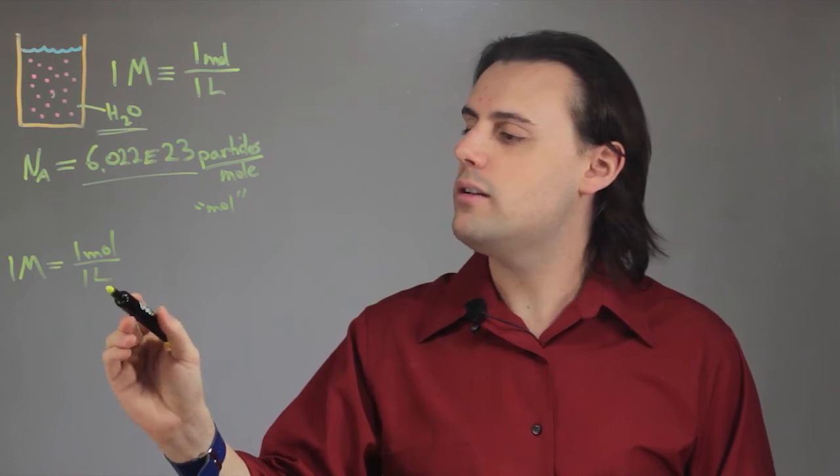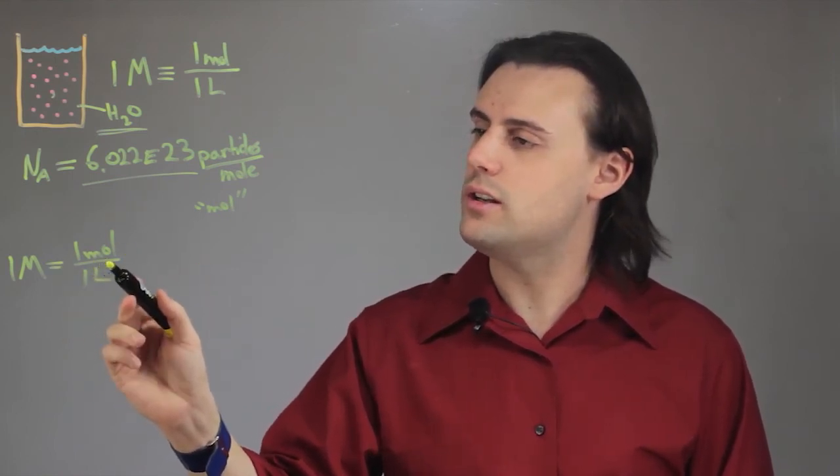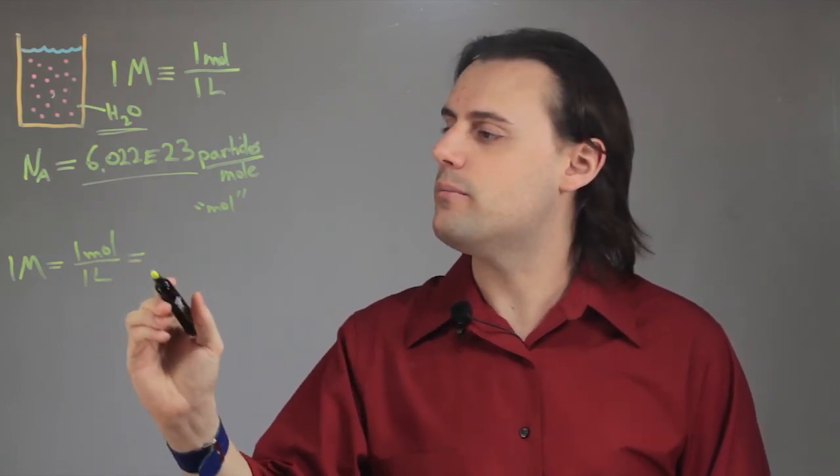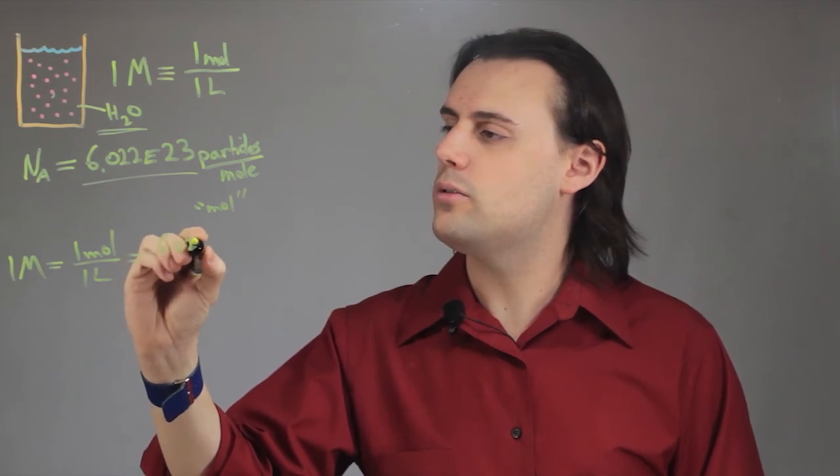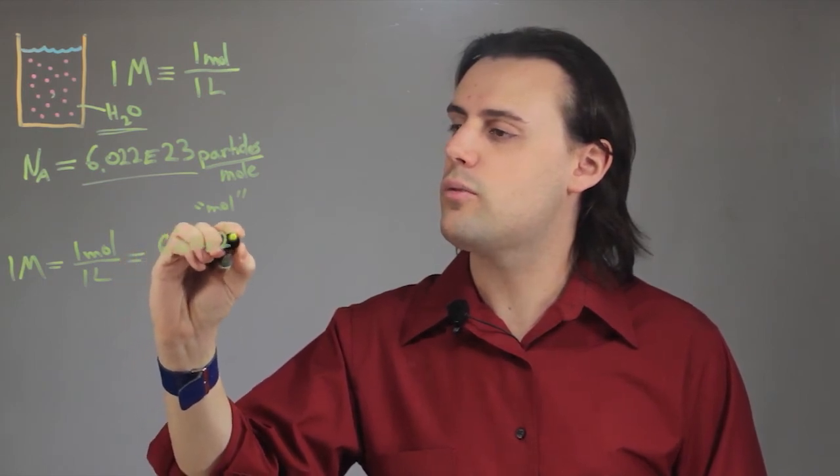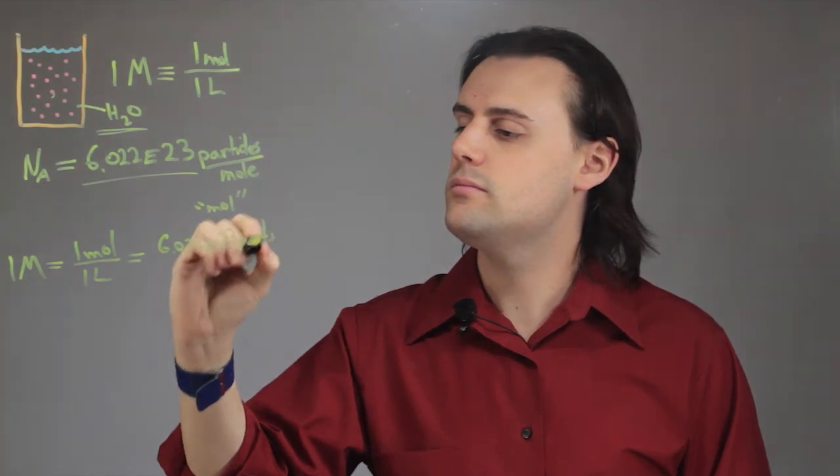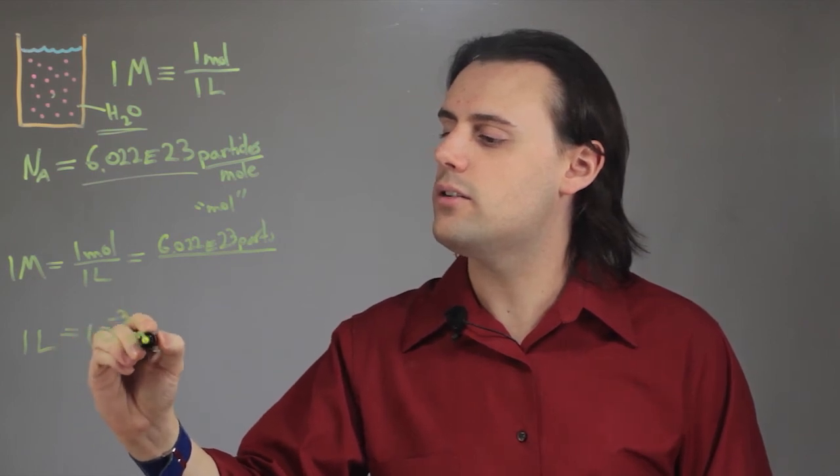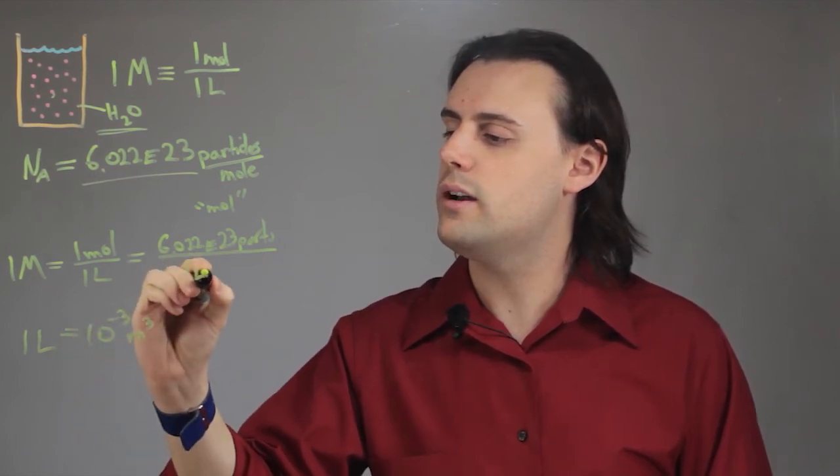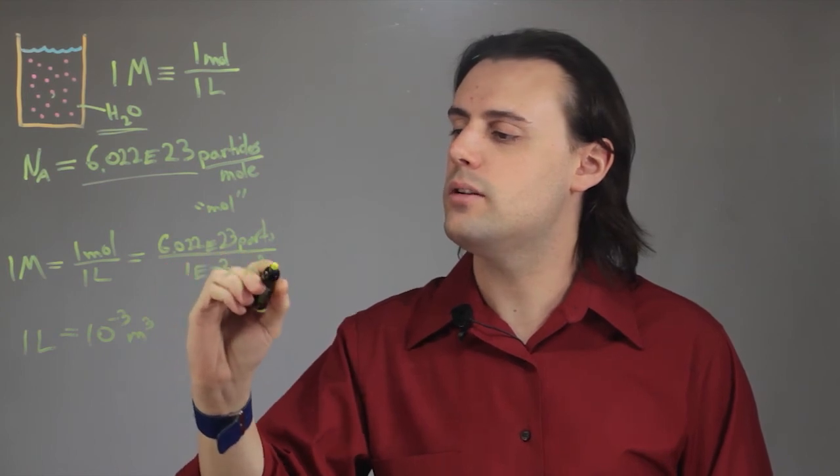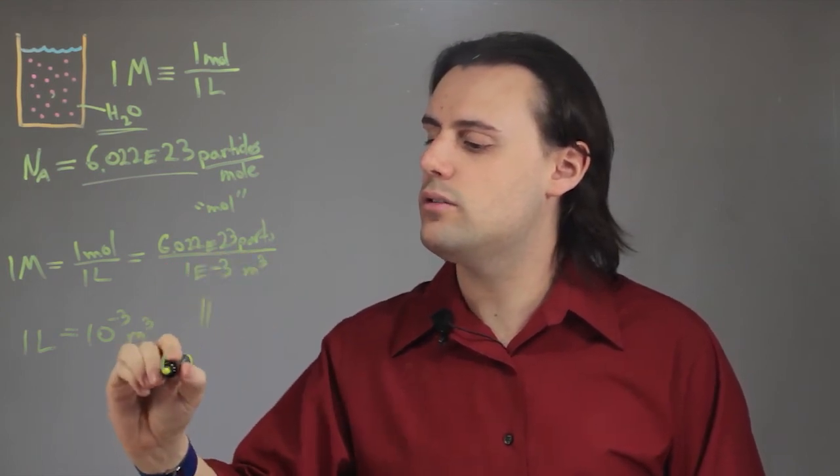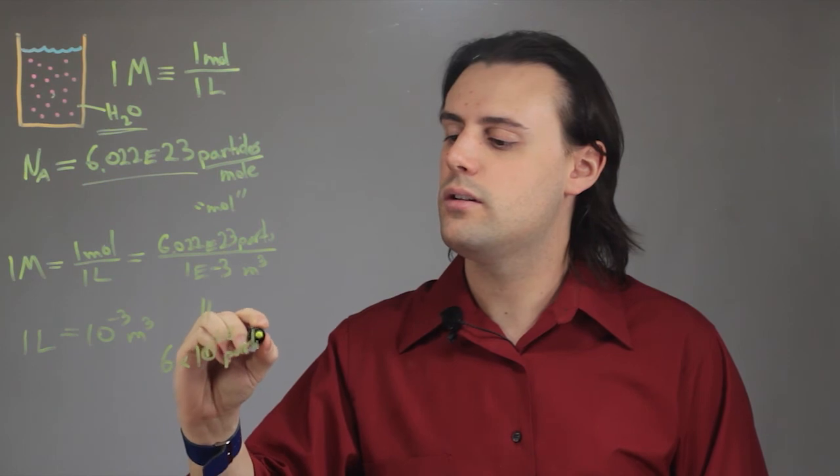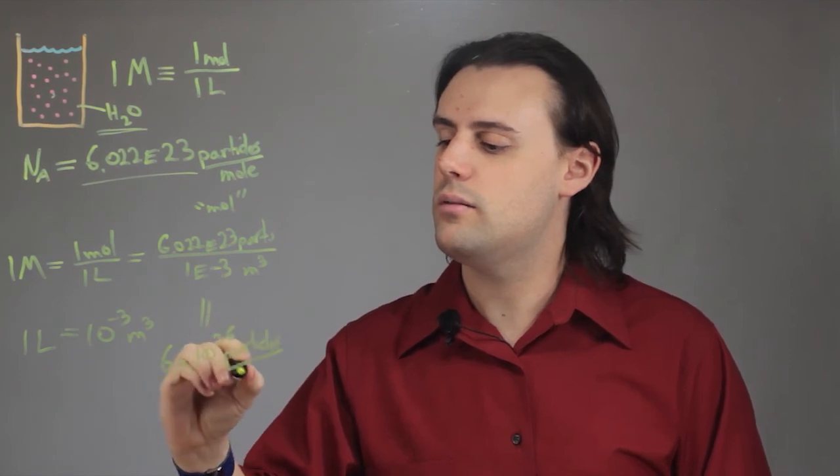And if I want to rewrite this expression in terms of particles per meters cubed, I just substitute in the definition. I'm going to have 6.022 times 10 to 23 particles. And one liter is equivalent to 10 to the minus 3 meters cubed. And this is approximately equal to 6 times 10 to the 26 particles per meters cubed.